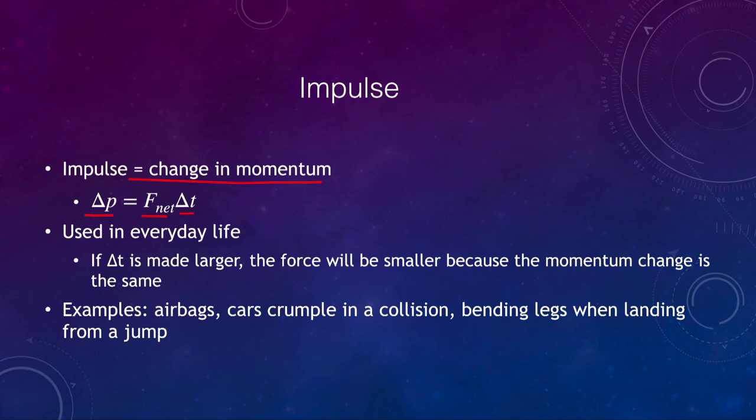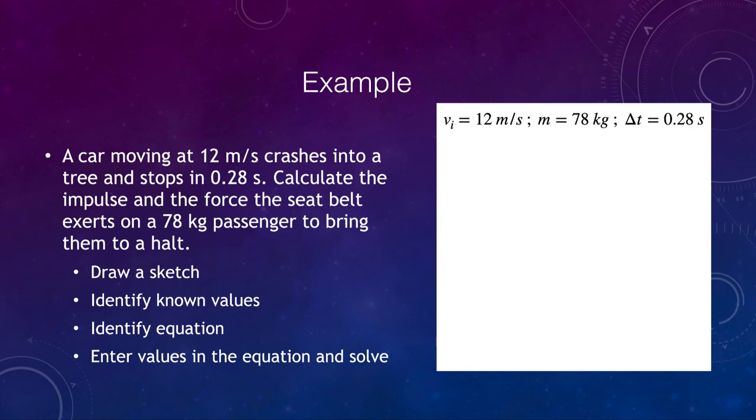Let's look at one more example on impulse. A car moving at 12 meters per second crashes into a tree and stops in 0.28 seconds. We want to calculate the impulse and force of the seat belt that the seat belt exerts on a 78 kilogram passenger to bring them to a halt. We write what we know. We know the initial velocity. We know the final velocity as well, it's zero. We know the mass and we know the change in time. We can calculate this. The change in momentum is the person going from, their mass does not change, 78 kilograms. They went from 12 meters per second to zero. So the change in velocity was 12 meters per second. We can then find the change in momentum of 940 kilogram meters per second. That's our change in momentum.